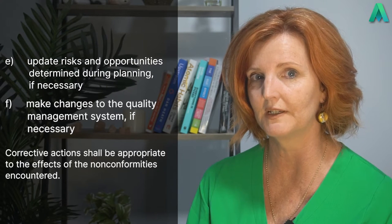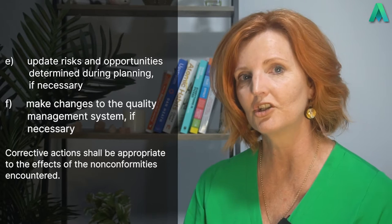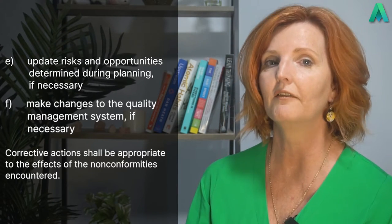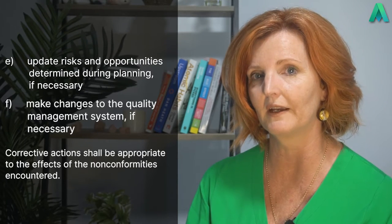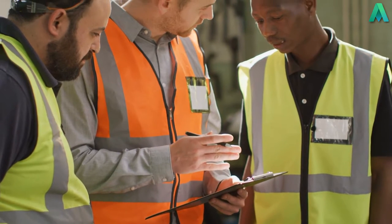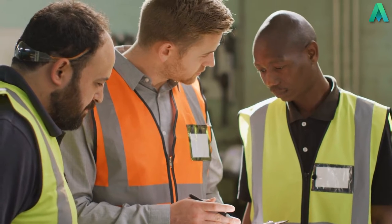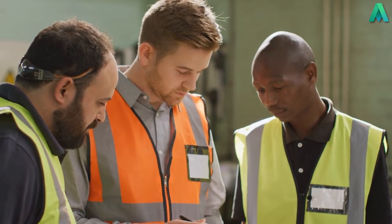To finalise the considerations for sub-clause 10.2.1, the last few points state the organisation shall: e) update risks and opportunities determined during planning if necessary; f) make changes to the quality management system if necessary; and corrective action shall be appropriate to the effects of the non-conformities encountered. These points ask whether a non-conformity means there are additional risks or opportunities missed in your initial assessment, and if so, whether this changes your quality management system and associated procedures. This provides a final loop back from an operations level into a systems level, and the corrective action taken should be at a level suitable for what actually occurred.